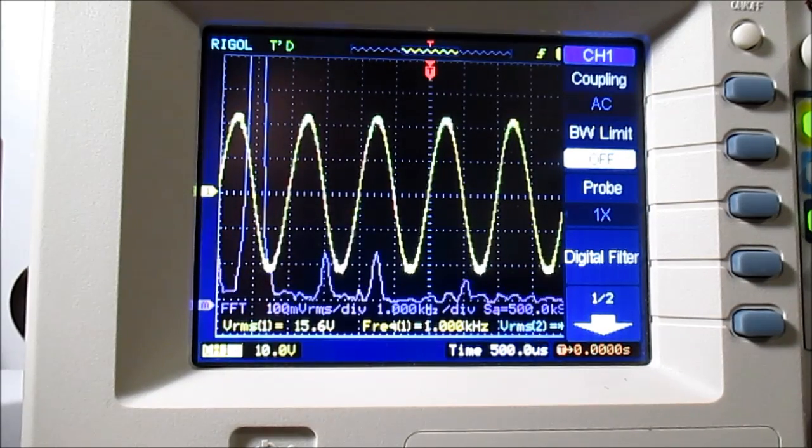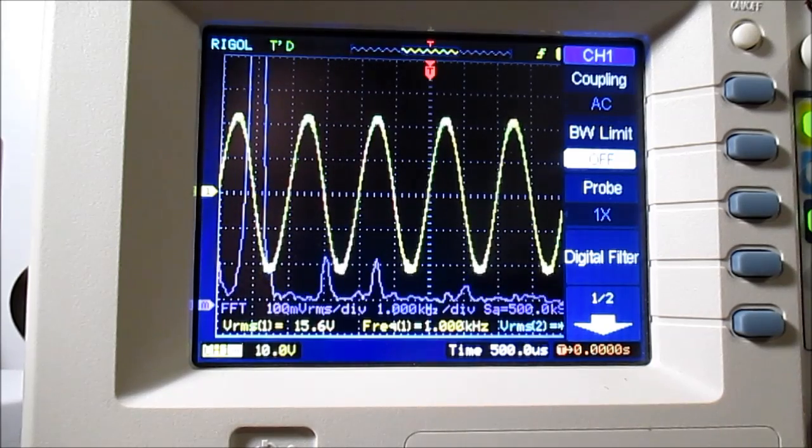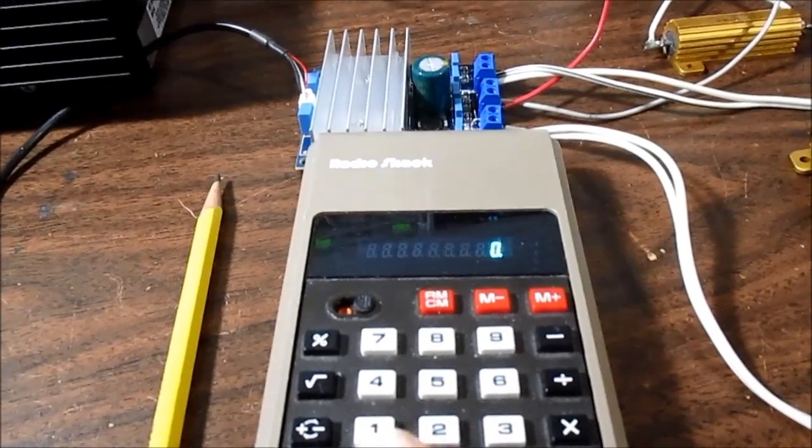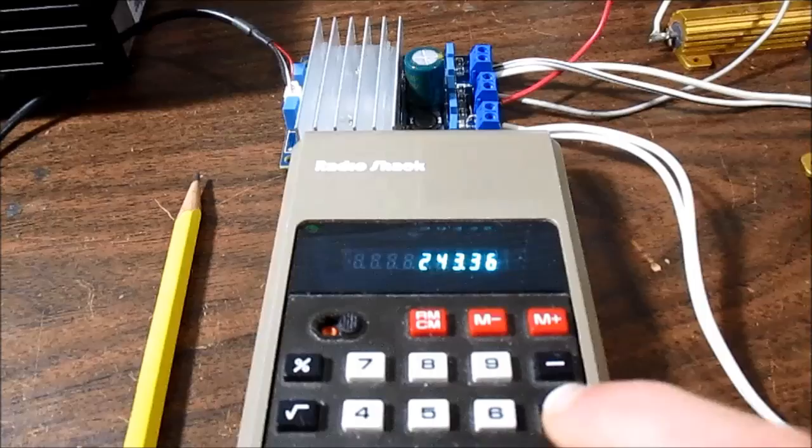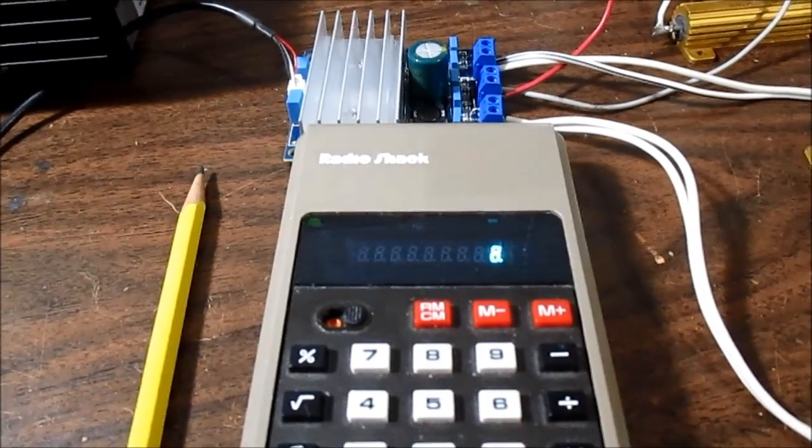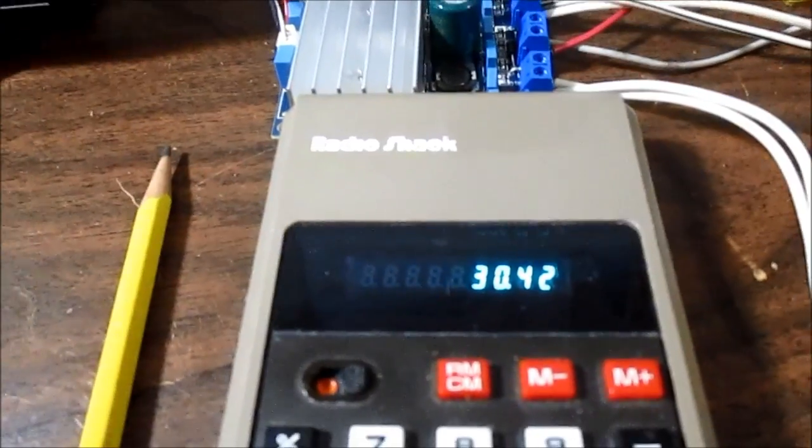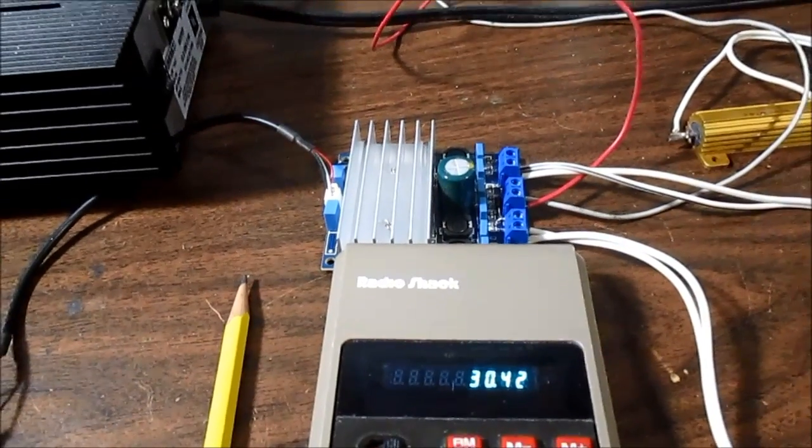Okay. 8 ohm loads running at 24 volts. 15.6 volts. So what did we get here? 15.6 squared, divide that by 8. 30.4 watts. Wow, this thing can deliver 30.4 watts of clean power.